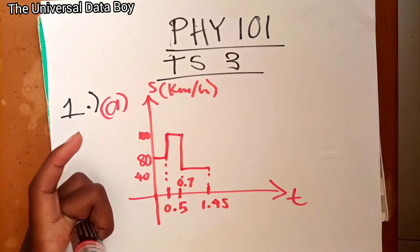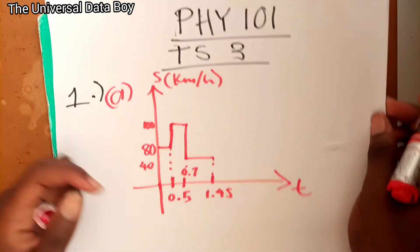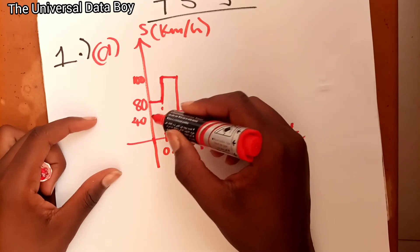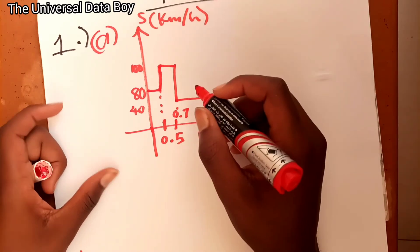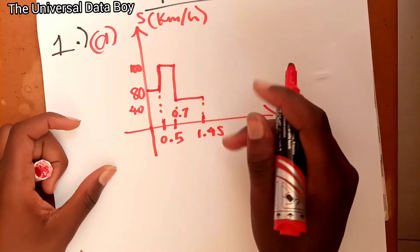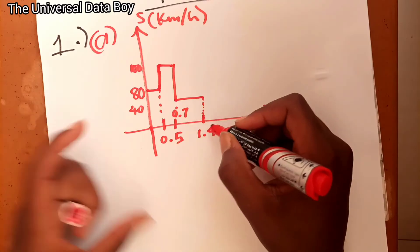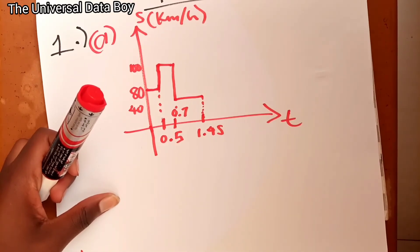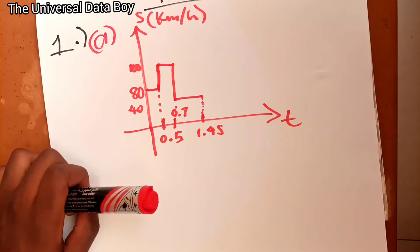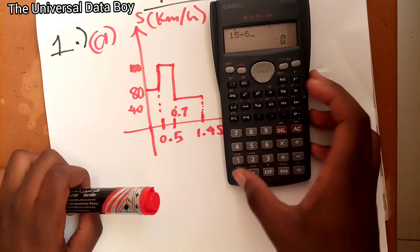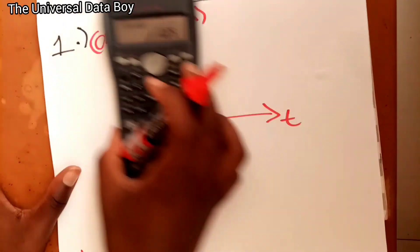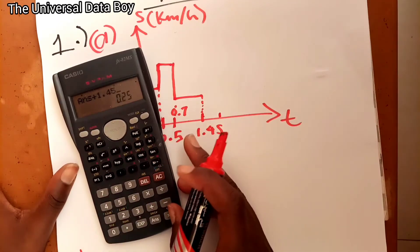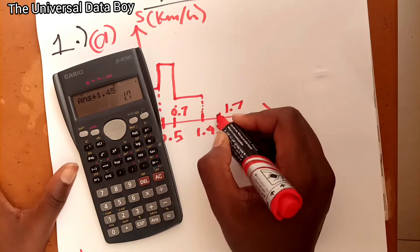That completes the speed-time graph. For part (b), we find the average speed. I'll find the total distance — which is the area under the graph — by calculating the area of each rectangle. The total time includes the 1.45 hours driving plus the 15-minute lunch stop: 15 divided by 60 is 0.25 hours, giving a total time of 1.7 hours.